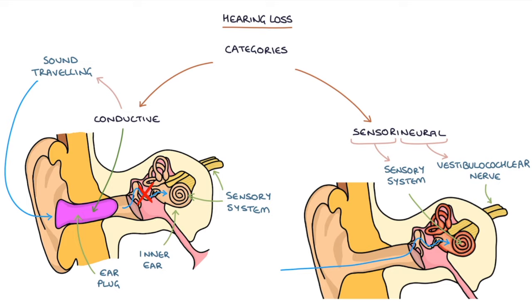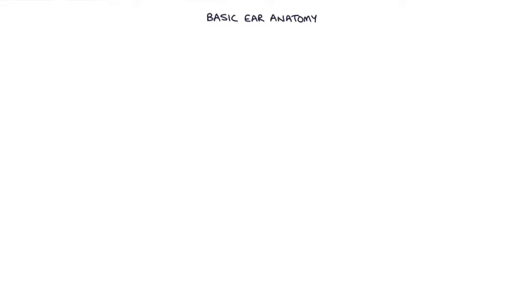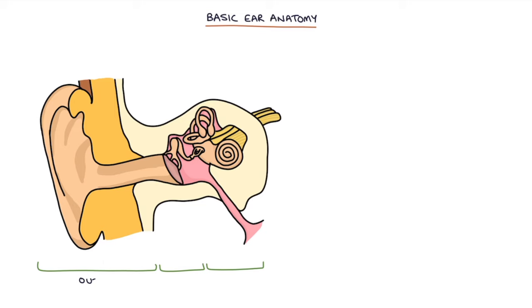Let's talk about some basic ear anatomy. There are three sections to the ear: the outer ear, the middle ear and the inner ear. The basic structures from the outside in are the pinna, which is the external portion of the ear, and the external auditory canal, which is the tube into the ear.